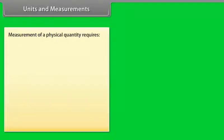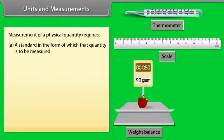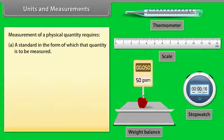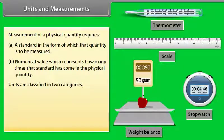Units and measurements. Measurement plays a very vital role in the study of physics. Measurement of a physical quantity requires a standard in the form of which the quantity is to be measured, and a numerical value which represents how many times that standard has come in the physical quantity. Units are classified in two categories.